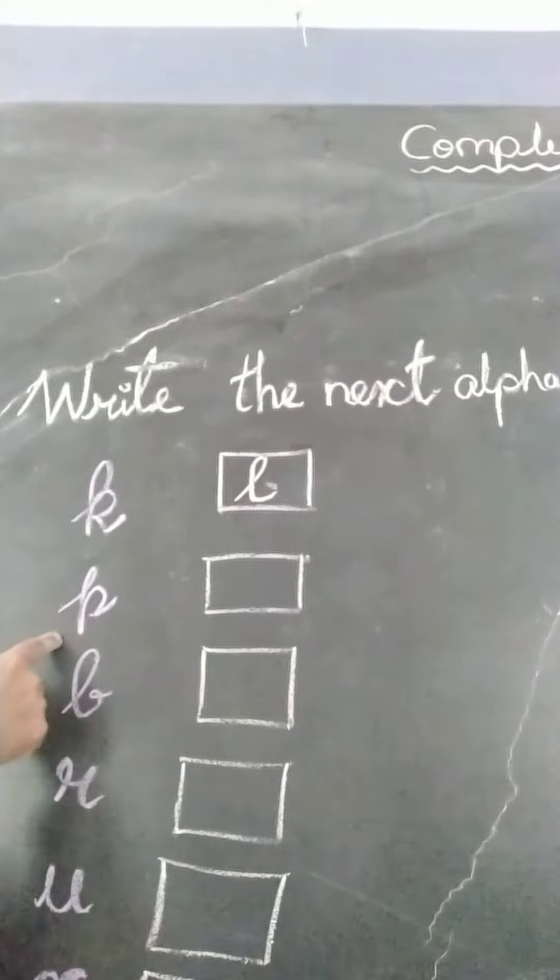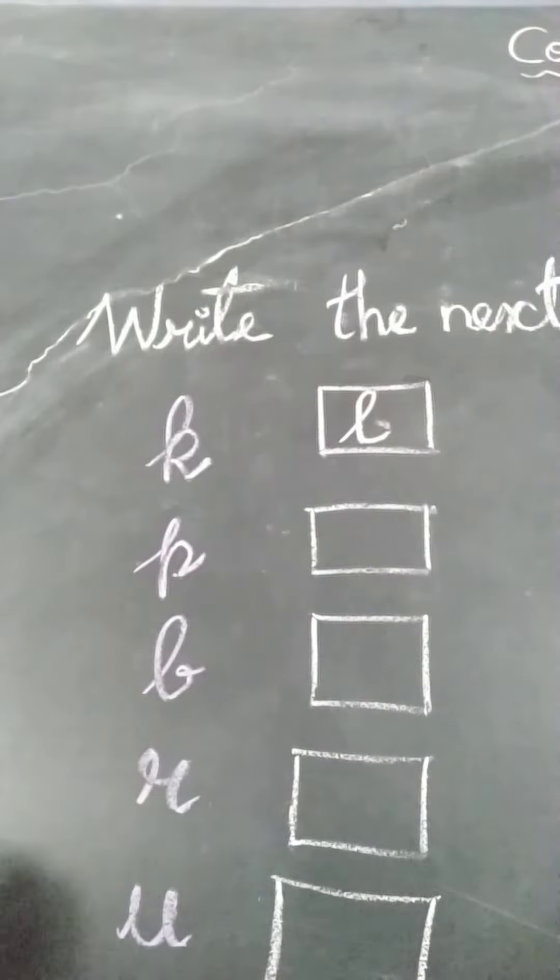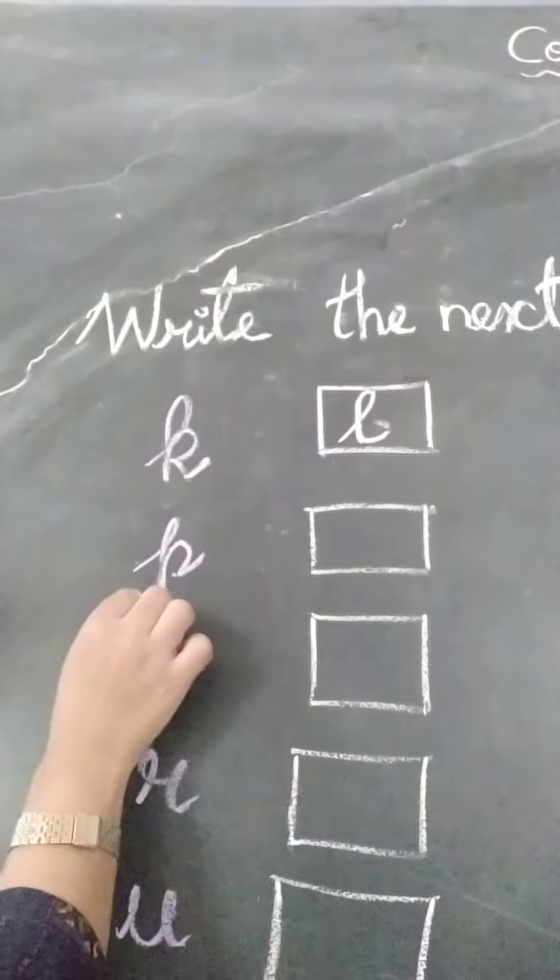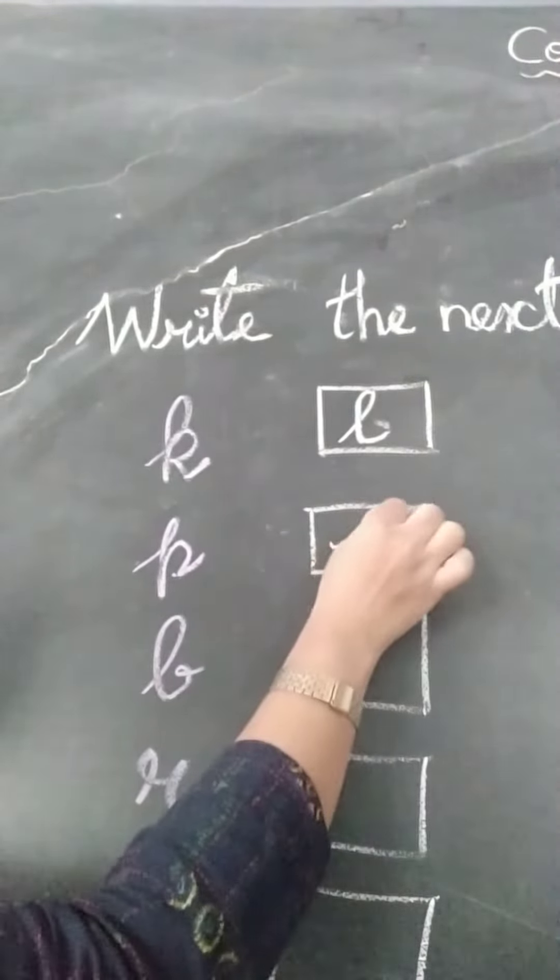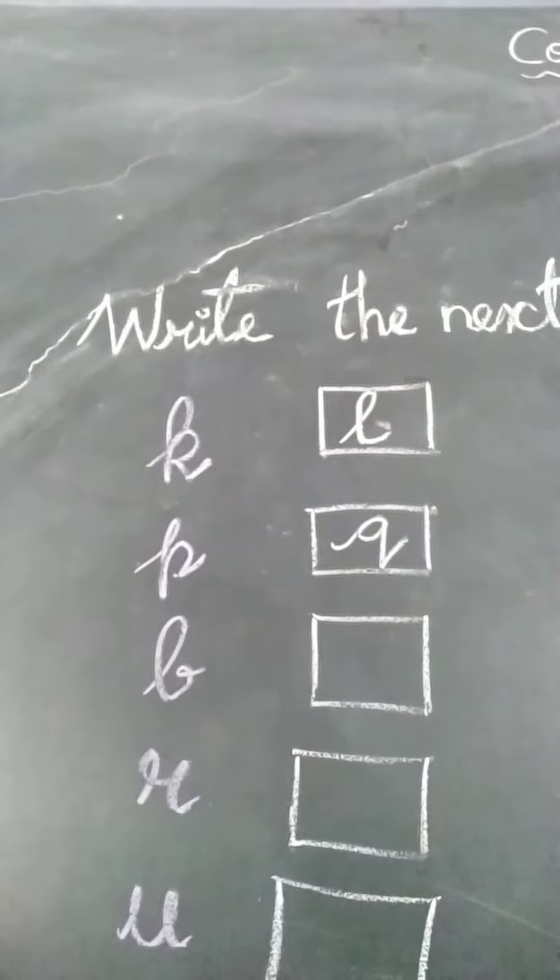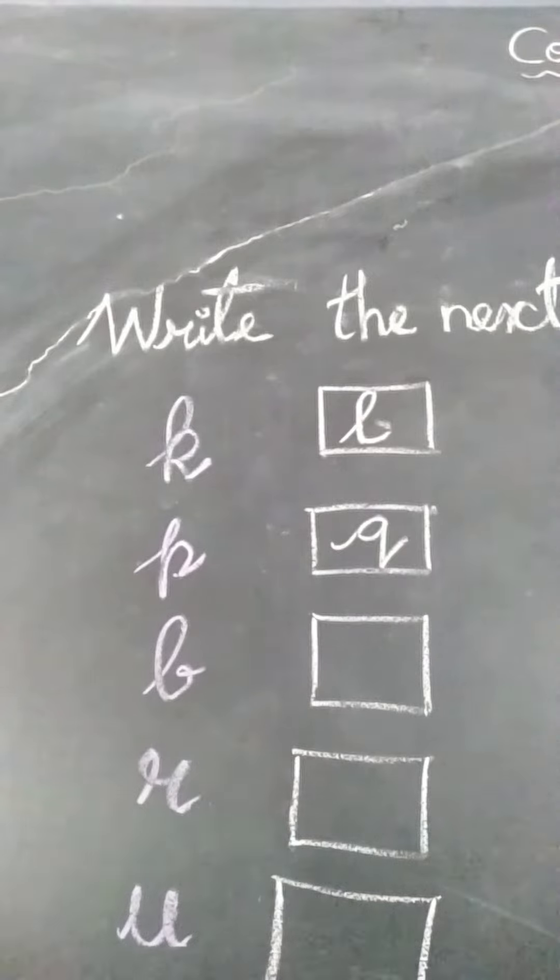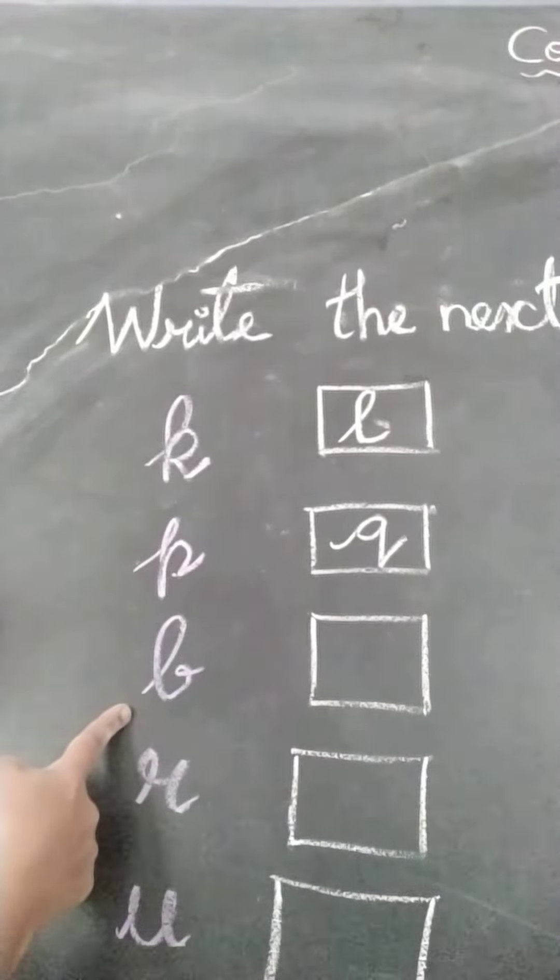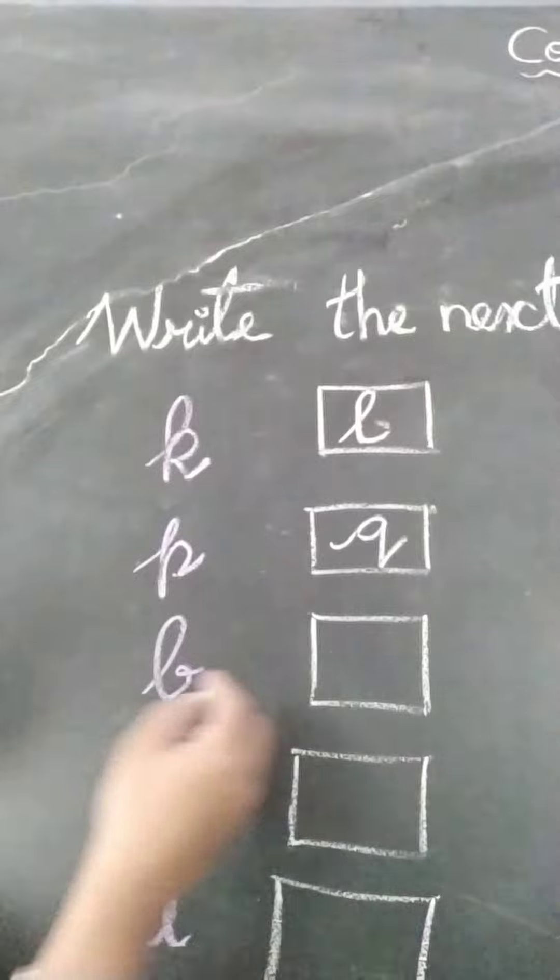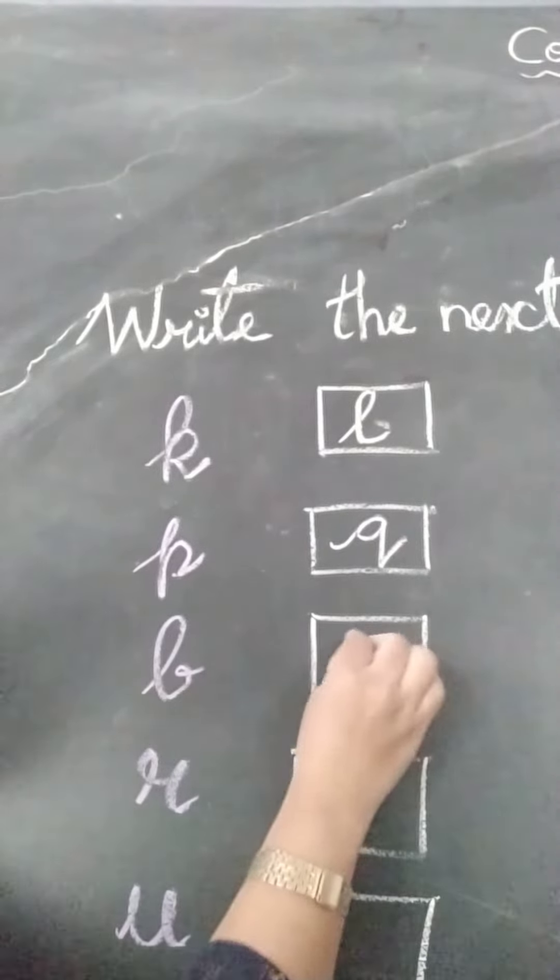The cursive alphabet is P. After P comes Q. Cursive small alphabets. The next alphabet is B. After B comes C. Cursive small C.